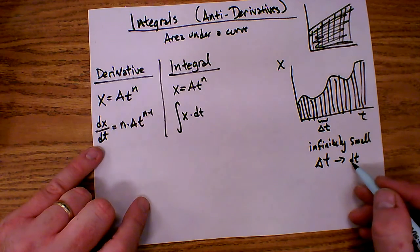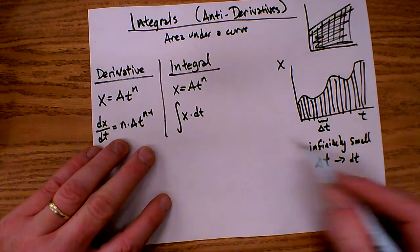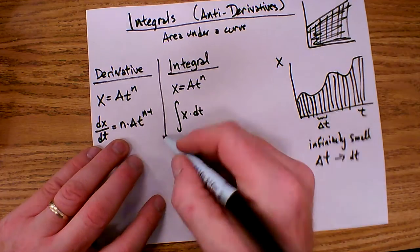So the dt here, the derivative d, is an infinitely small delta. So that's where this notation comes from.